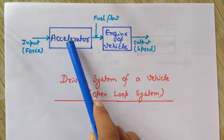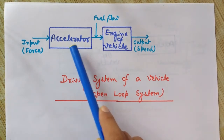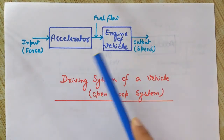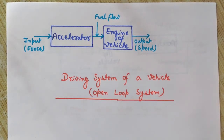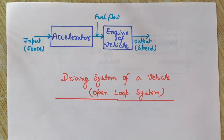We can change the fuel flow into the engine by varying the pressure of our leg muscles on the accelerator. By changing the flow of fuel into the engine, the speed of the vehicle is varied. This is an open loop system because we are just pressing the accelerator with our leg and getting some speed as output, but there is no desired speed to achieve — no controlling in the system.